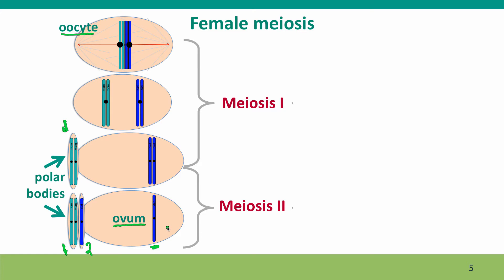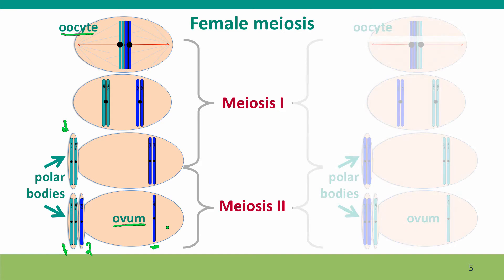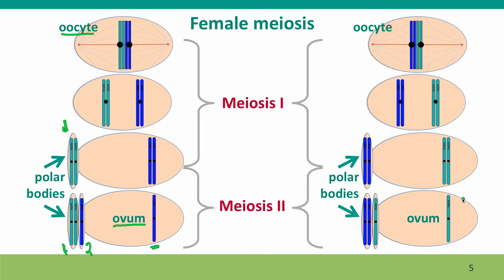This creates a further complication when we think about the products of meiosis genetically. If we consider another meiosis in which the chromosomes line up differently — in this case, the light-colored one is on the right-hand side — then the first polar body gets the dark blue chromosomes, and the single ovum has a different genotype than it did in the first version of meiosis we showed.